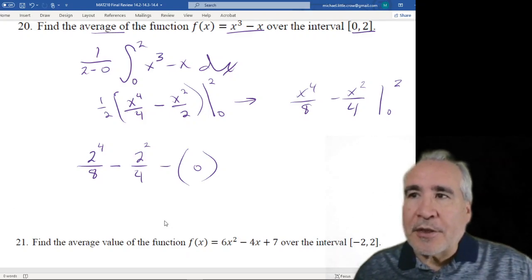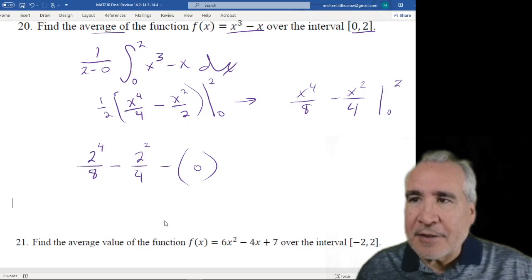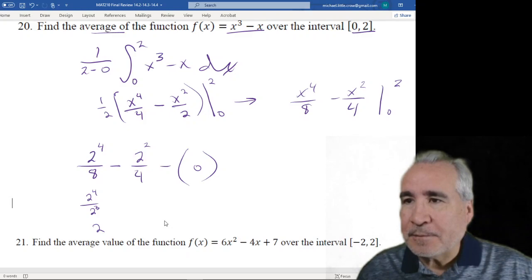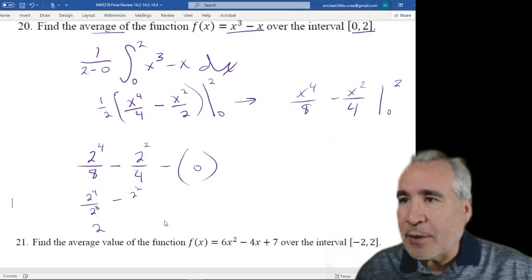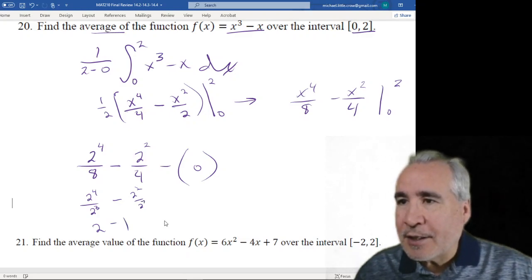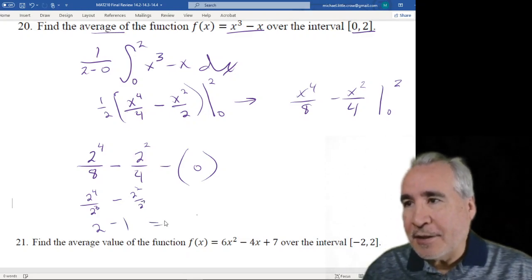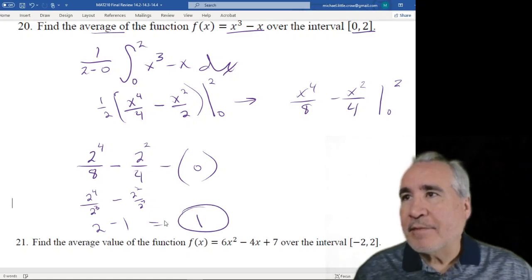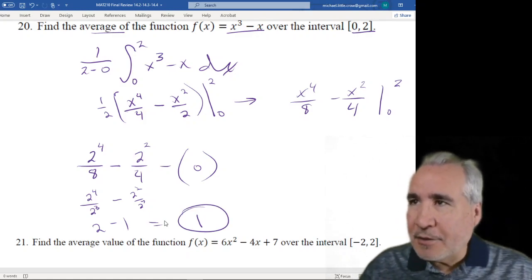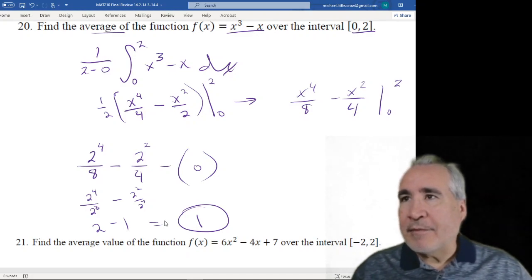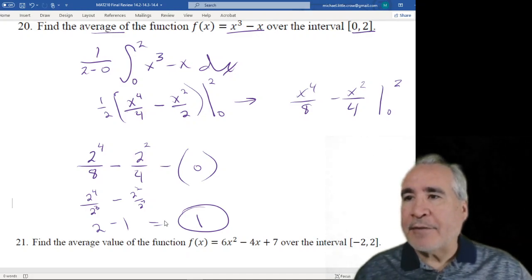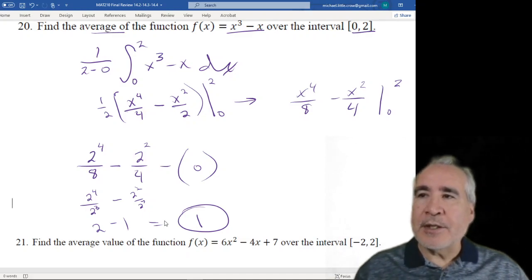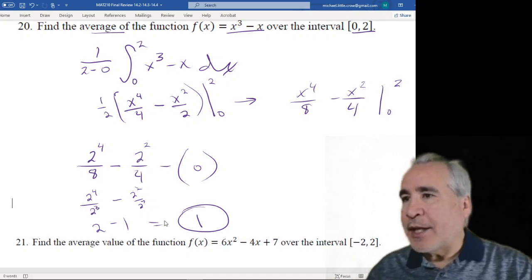8 is really 2 to the 3rd. So if you want to think of this, this is 2 to the 4th over 2 to the 3rd. That's just going to be 2. 4 is 2 squared. So that's 2 squared over 2 squared, which is 1. 2 minus 1 is 1. You could have also done the graphing calculator method and gotten your answer and then multiplied by a half. So I think your answer probably would have been 2. Multiply by a half, you get 1 as your answer.